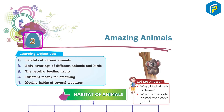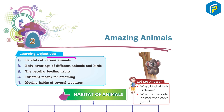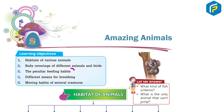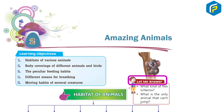Chapter 2: Amazing Animals. Learning objectives: 1. Habitats of various animals. 2. Body covering of different animals and birds. 3. The peculiar feeding habits. 4. Different means of breathing. 5. Moving habits of several creatures.